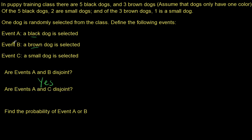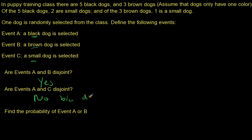Are events A and C — black and small — disjoint? No, because dogs can be both black and small. There are in fact black small dogs in this example. So A and C are not disjoint; they may occur at the same time.